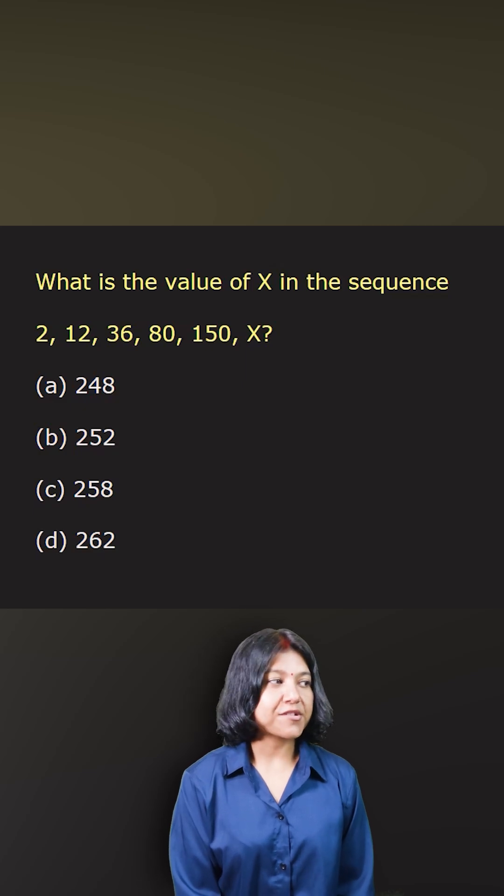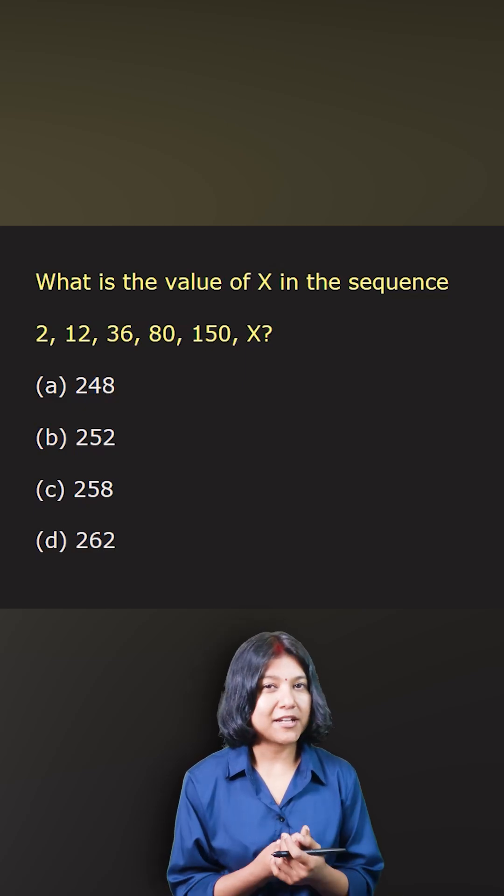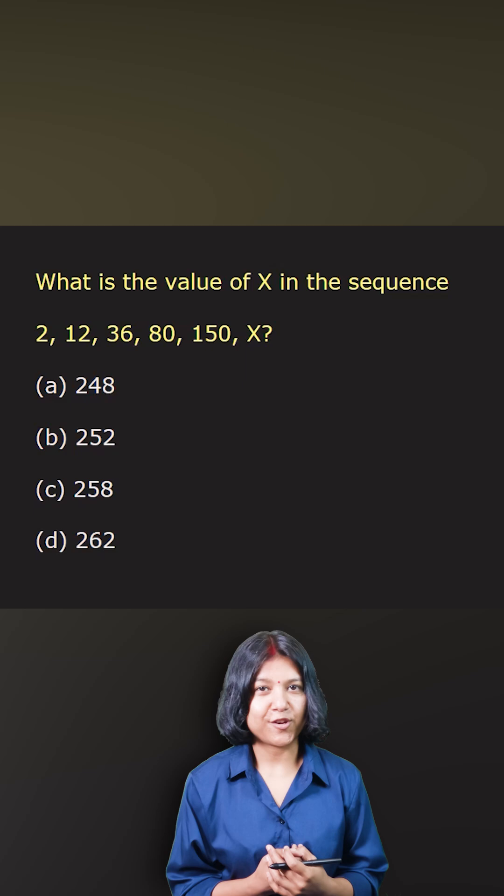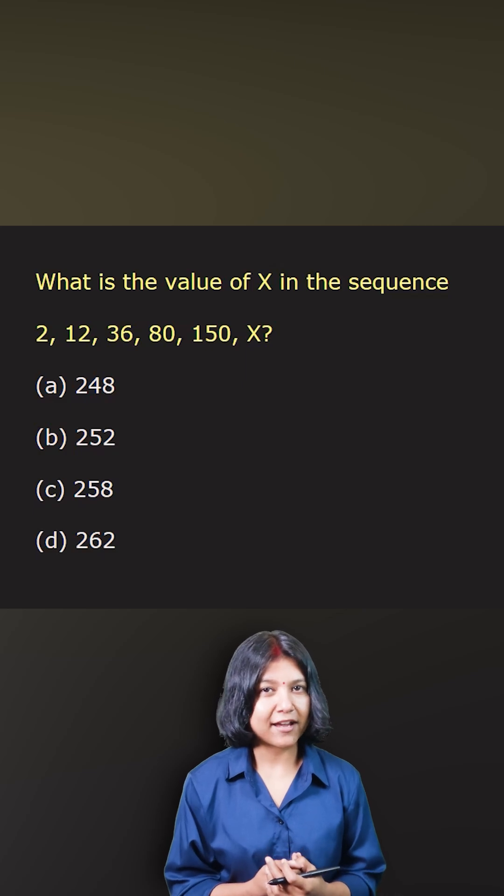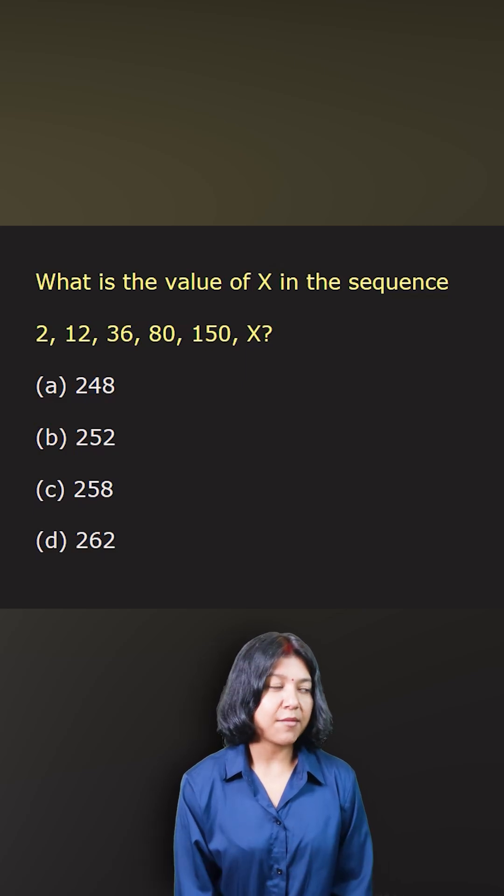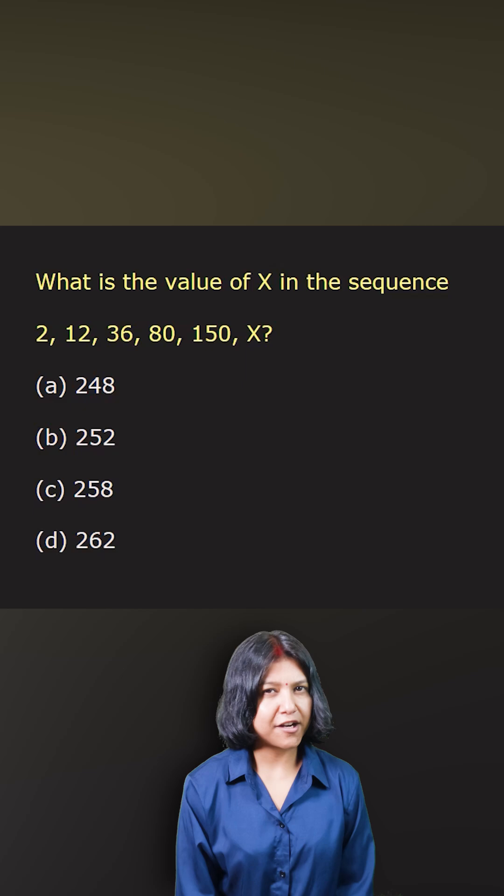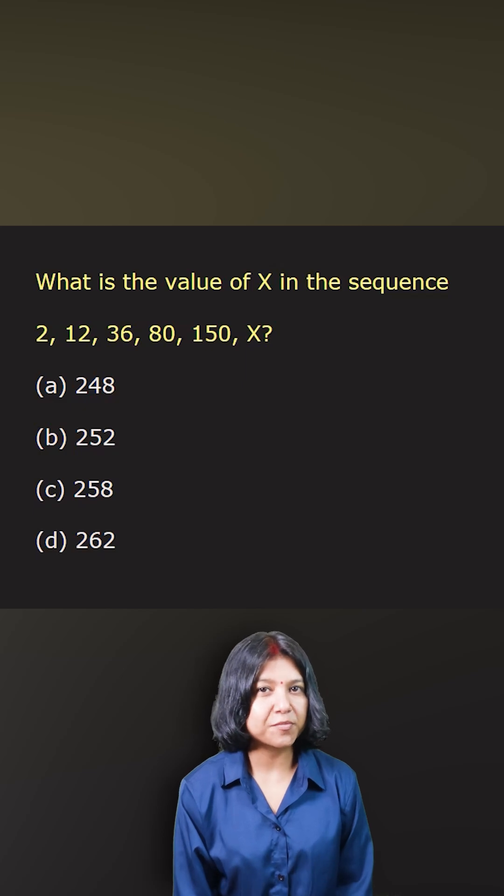You look at the sequence, the values are increasing so it's definitely not linear. I'm going to try with powers. I look at the numbers 2, 12, 36 - they're kind of closest to the cube numbers.